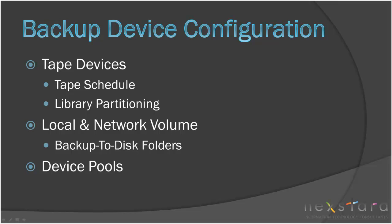When using backup-to-disk folders, it is important to consider the designation of a low disk space threshold. This is the amount of free space that will cause the backups to halt. It is also important to verify that the Backup Exec Service account has access to the backup-to-disk folders, because the backup jobs will immediately fail if it does not have access. Lastly, you will want to put some thought into the arrangement of the backup-to-disk folders since they should be easy to identify and manage.